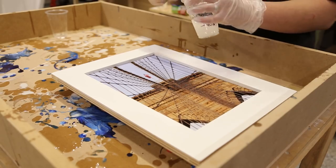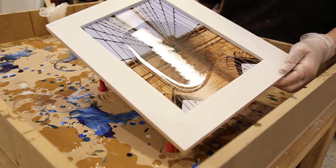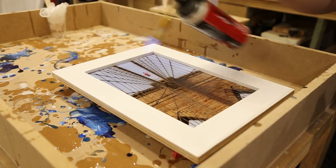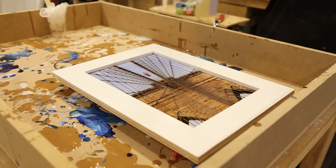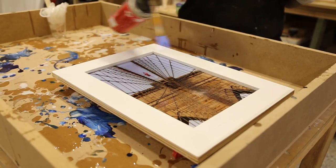Once you have everything covered you can then use the butane torch to lightly torch the resin to remove any of the air bubbles. Now when using the torch I made sure to not hover in one area for too long otherwise the photo will start to melt so I found quick passes and at a distance worked best.